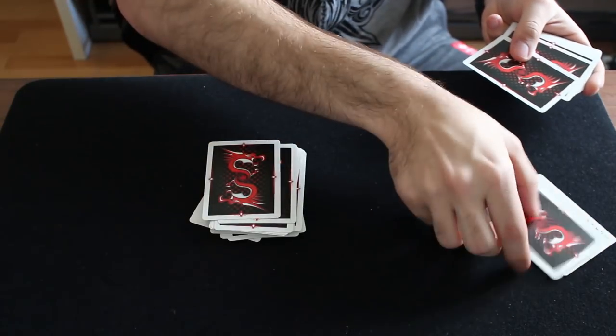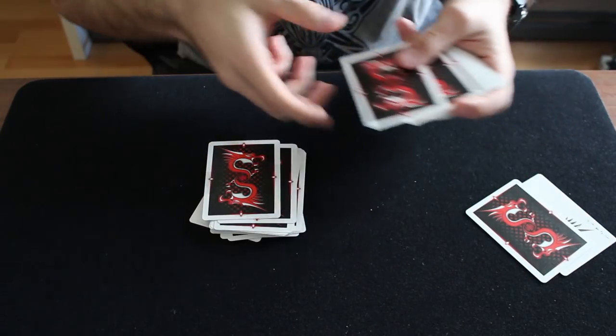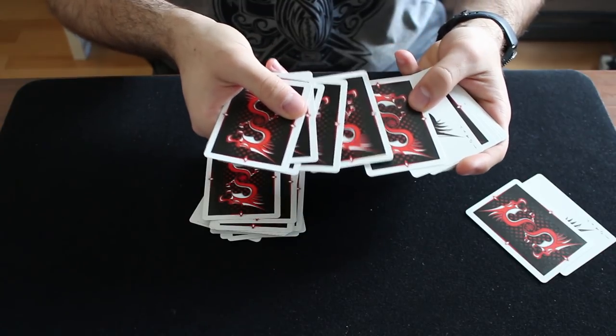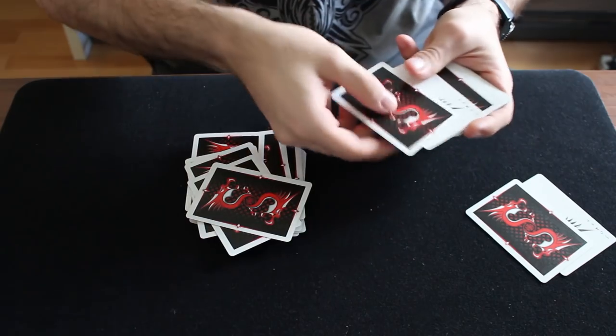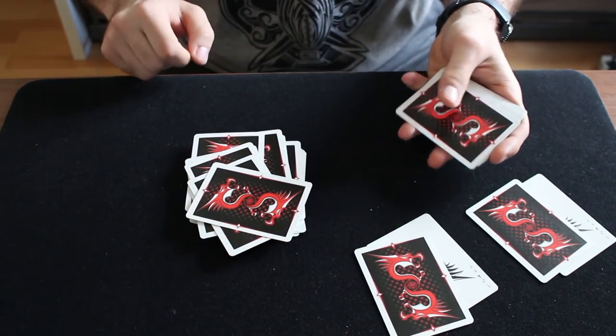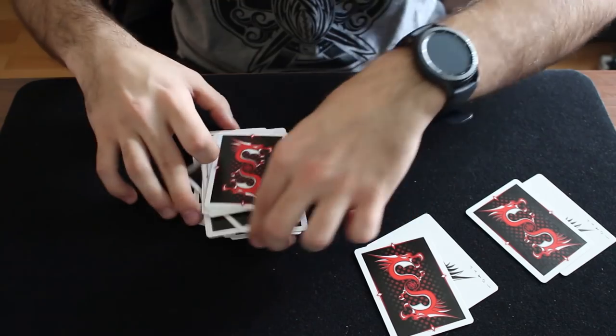Now take the jokers and put them apart. Now continue spreading until you reach to the second joker with the facing down card. Again break here, place these on top, and separate the jokers from the other cards. And the remaining ones go on top.